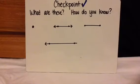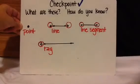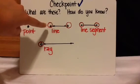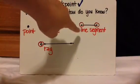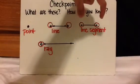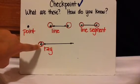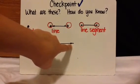It's time for a checkpoint. Press pause and point to each figure, say what it is, and explain how you know. Here are the answers: this is a point. This is a line — I circled the two arrows on both ends to show it goes on forever, remember 'to infinity and beyond.' This is a line segment — I circled the two points to show it's a part of a line. This is a ray — I circled one arrow to show that a ray goes forever on one side and starts on the other.